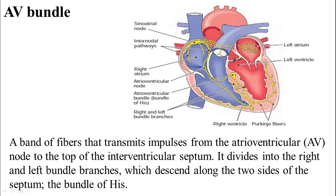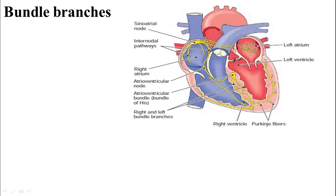The septum is the wall inside the heart. We have the interatrial septum and the interventricular septum. The AV bundle divides into the right and left bundle branches, which extend along the two sides of the interventricular septum. Another name for the AV bundle is the bundle of His. Bundle branches are branches of the bundle of His — the right and left bundle branches run alongside the interventricular septum, and finally branch into the Purkinje fibers, which dip into the myocardium.